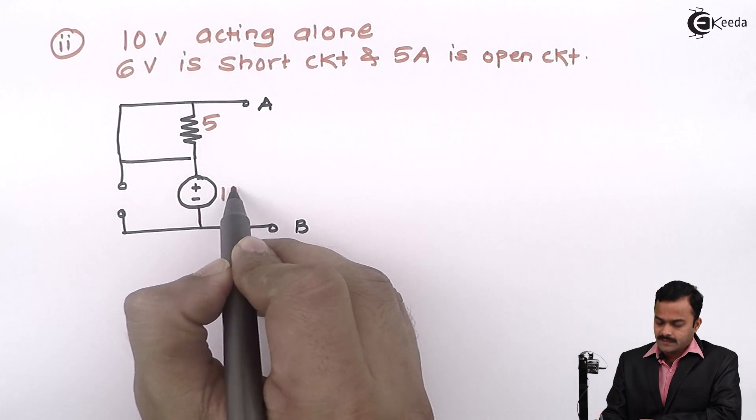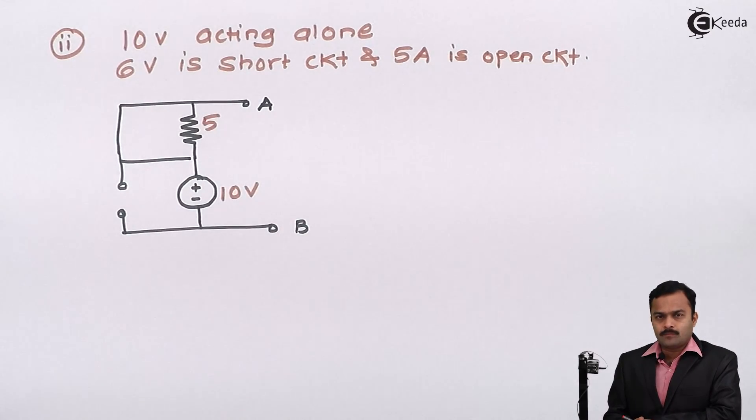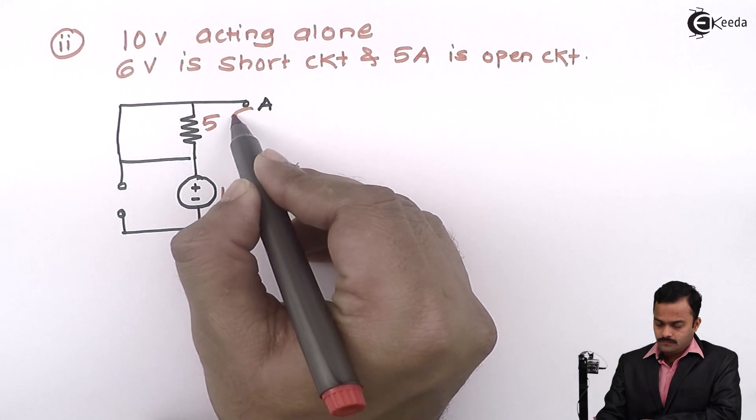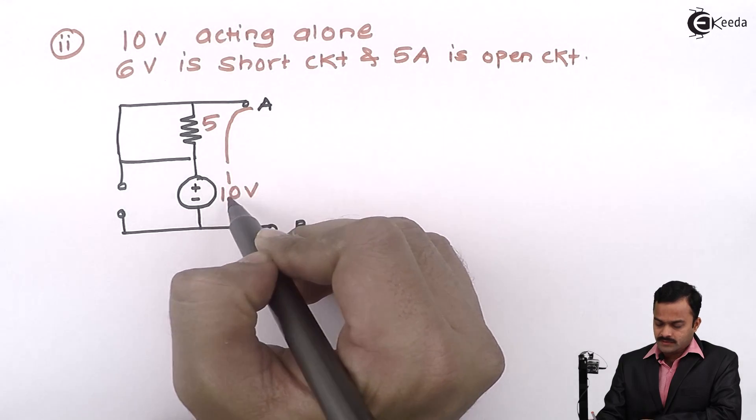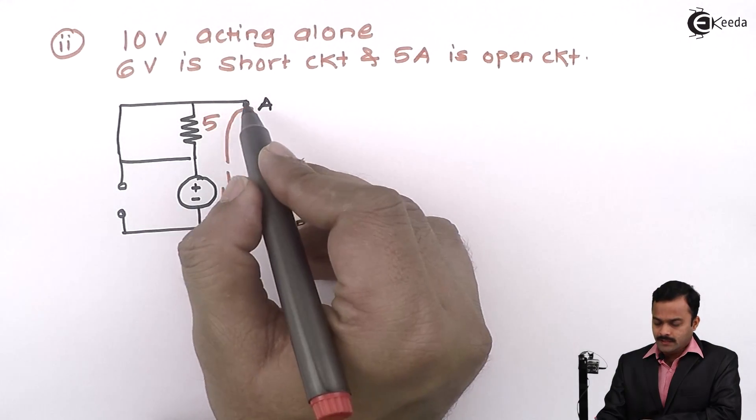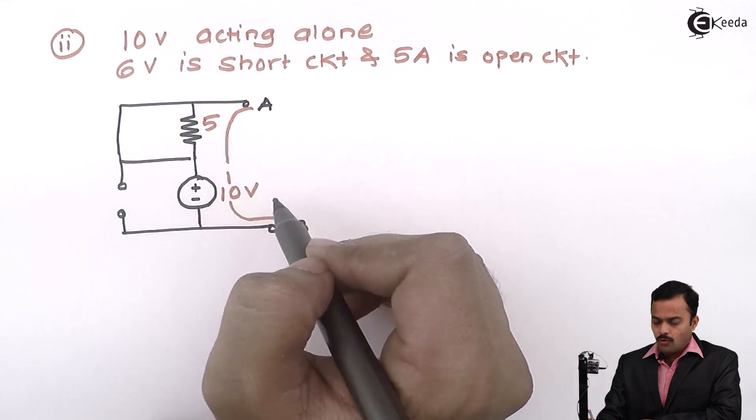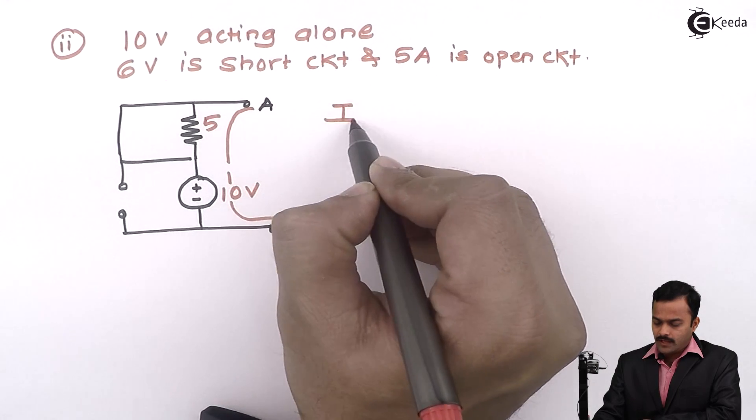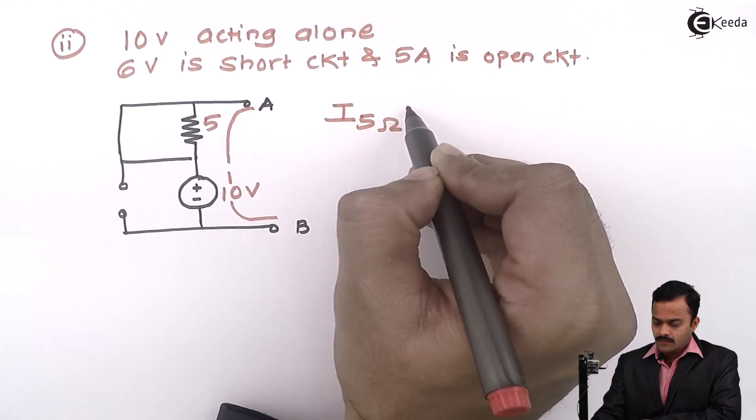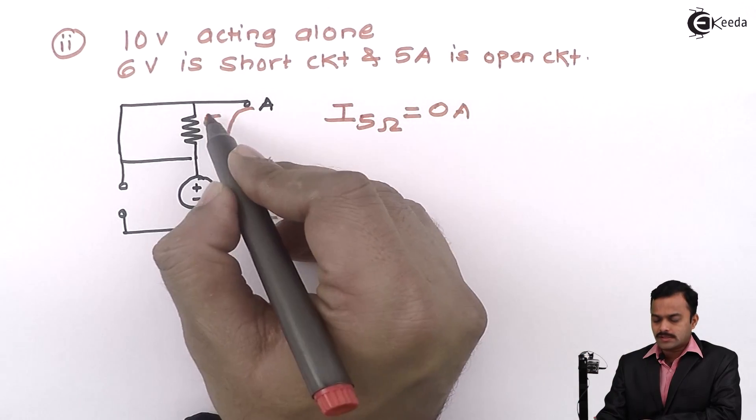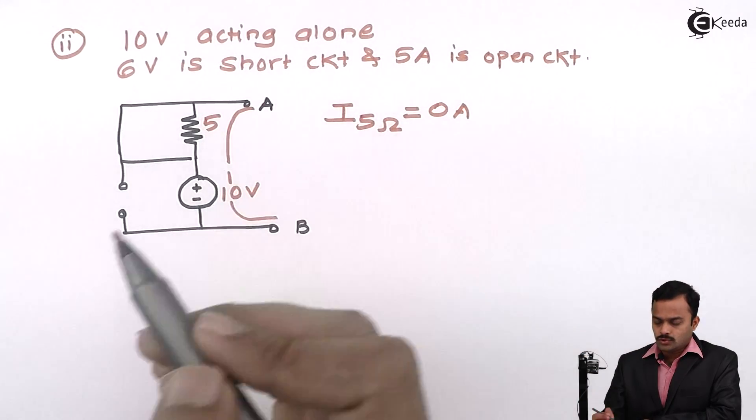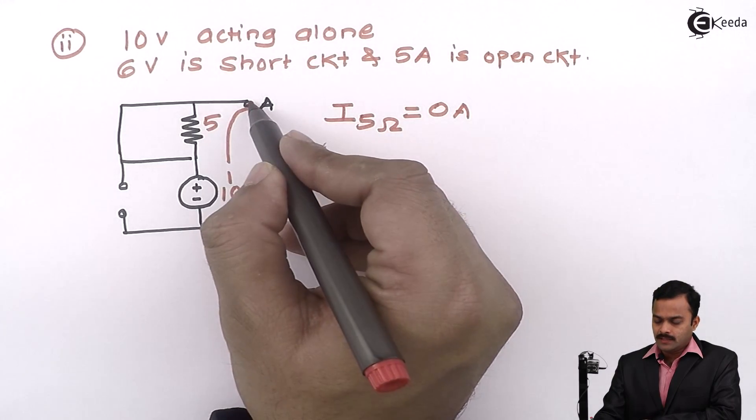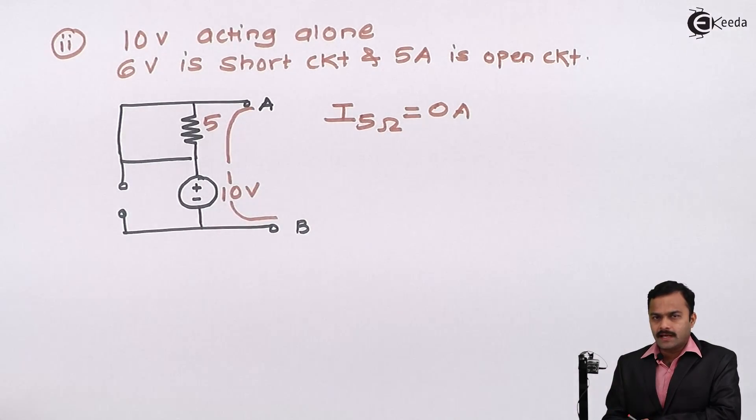So I will get resultant circuit like this. Again, I need to consider this loop which is covering A and B points. So in this loop, since it is open circuited here at point A as well as at point B, current flowing through 5 ohm resistance will be 0 ampere because it is not closed.